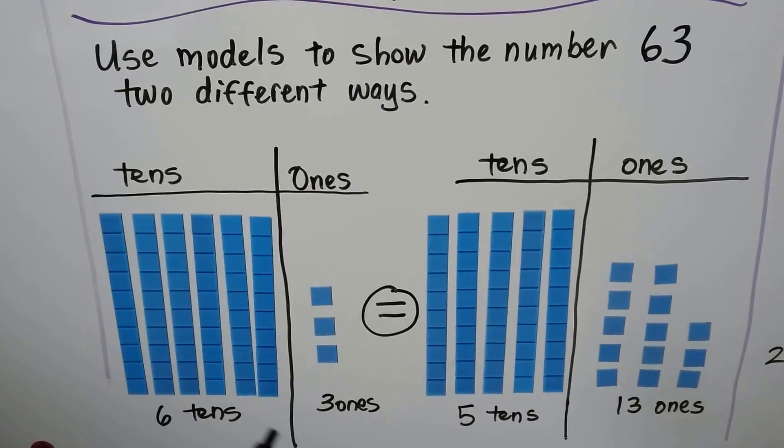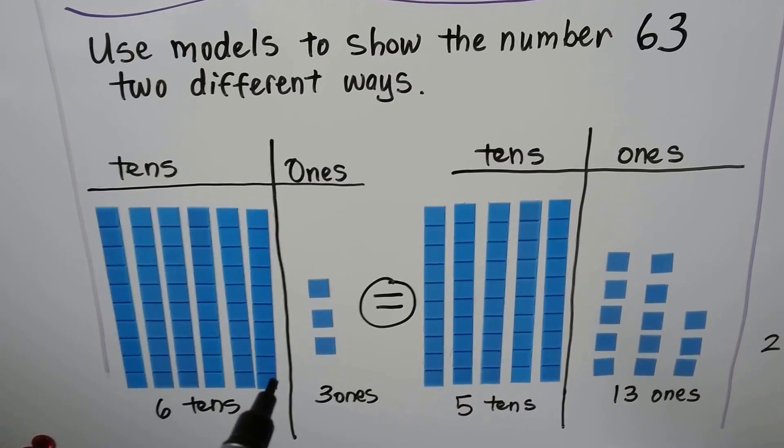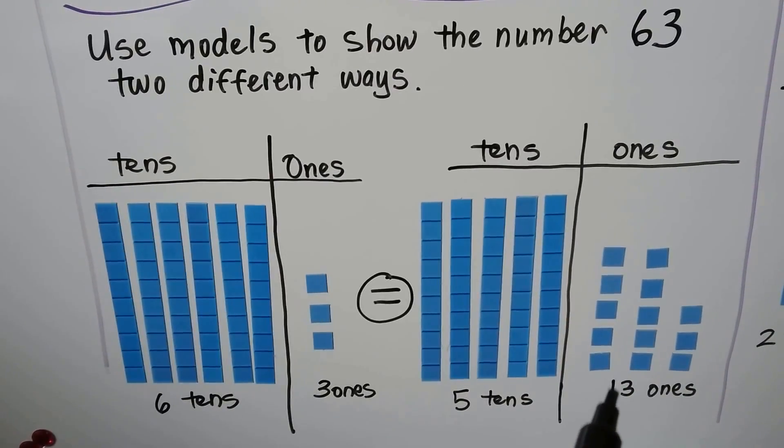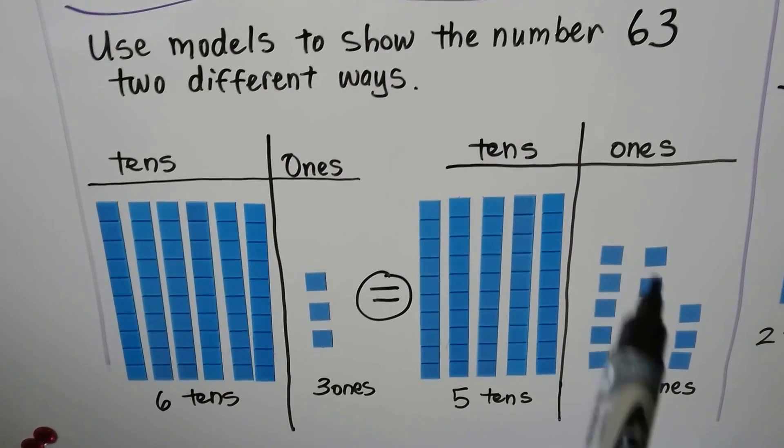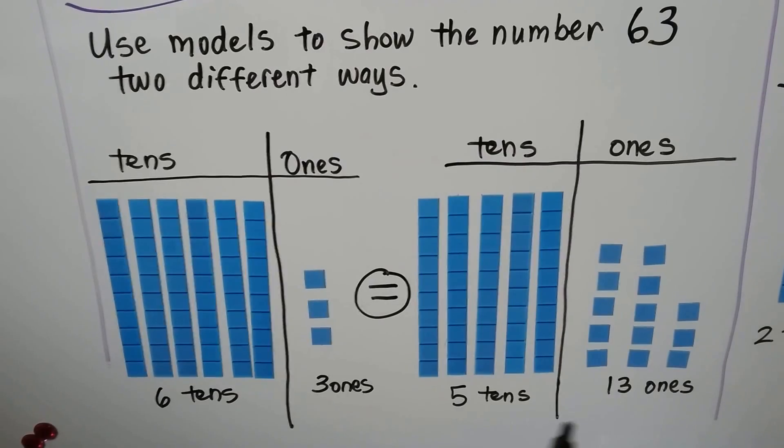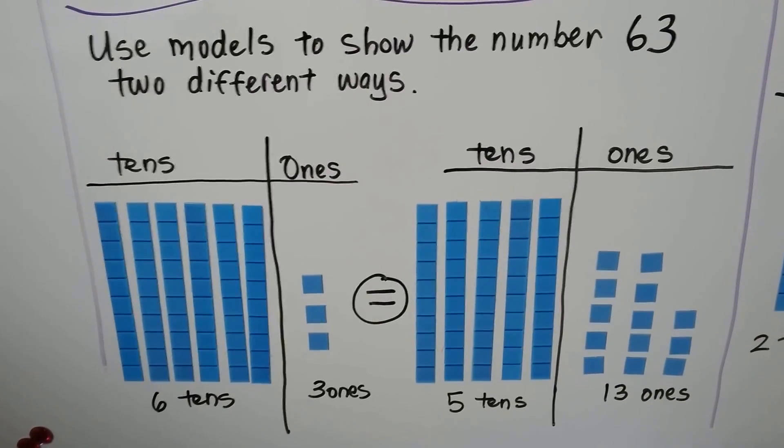...and 3 ones. We can also take one of these bars of 10 and break it into ones and put it on the one side. See? Here's the 10 that we broke into units. Now we have 5 tens and 13 ones. That's still 63.